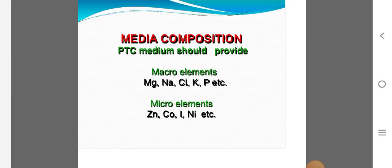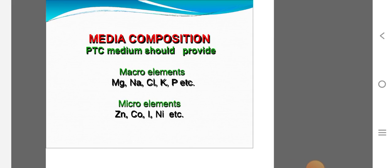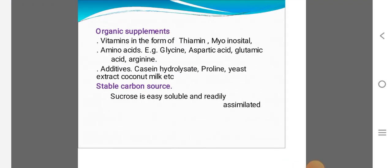Coming to preparation of the media, media composition. Plant tissue culture media having macronutrients and microelements. In macro: magnesium, sodium, calcium, potassium, phosphorus. Microelements: zinc, cobalt, iron, nickel, et cetera are used.